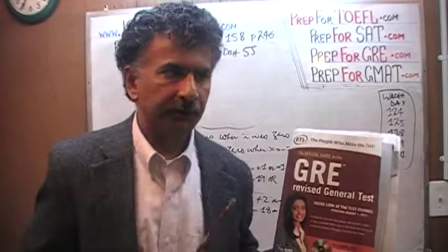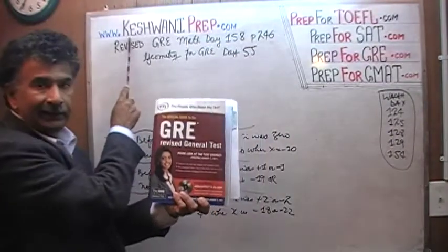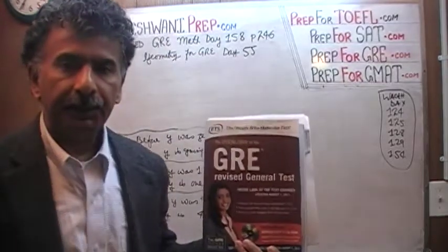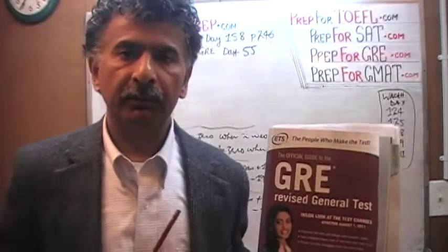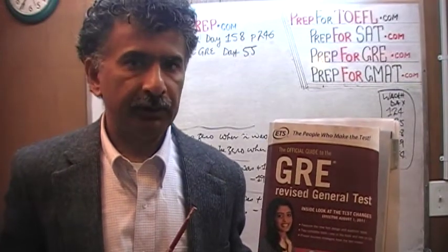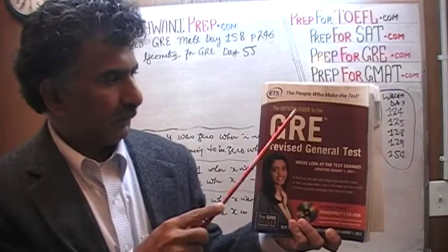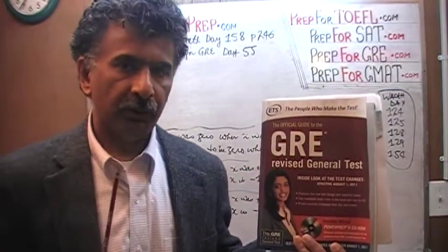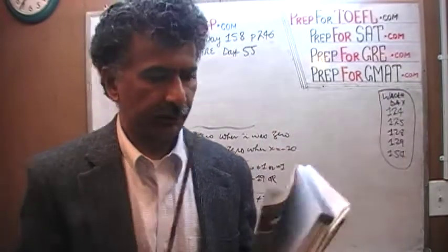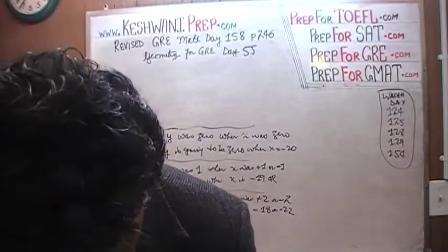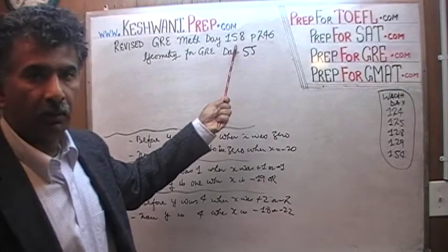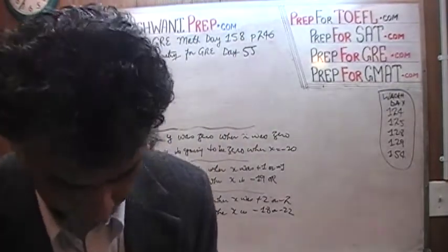Hello, my name is Keshwani, K-E-S-H-W-A-N-R. We are here because we want to prepare for the GRE. We have been solving GRE math problems out of this book, the official guide to the GRE revised general test. If you do not own this book already, purchase one immediately. The problem we are about to solve is on page 246, and today is our lesson number 158. Let's turn to page 246, part C.